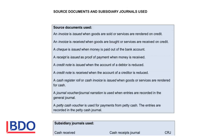An invoice issued means that the business gives the invoice to someone else. That is when the business renders a service to someone else or they sell goods on credit. So goods sold or a service that was provided on credit to your customers — you will issue an invoice.